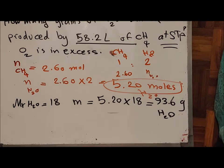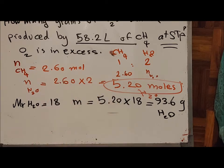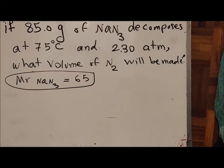If temperature and pressure are different from standard conditions, we cannot use those simple equations. We have to use the ideal gas law: PV = nRT.